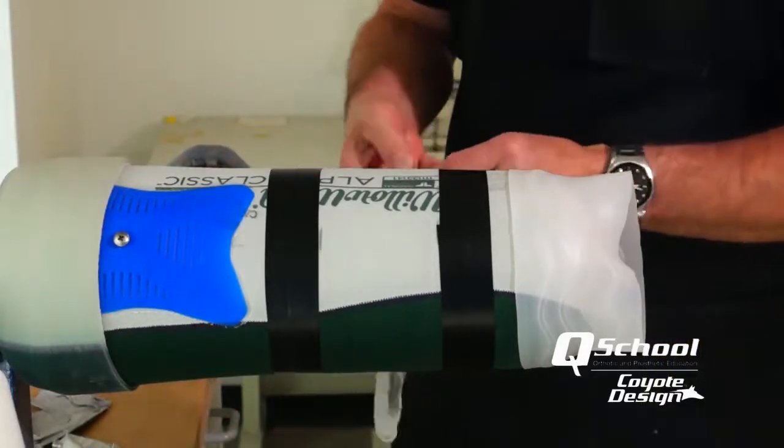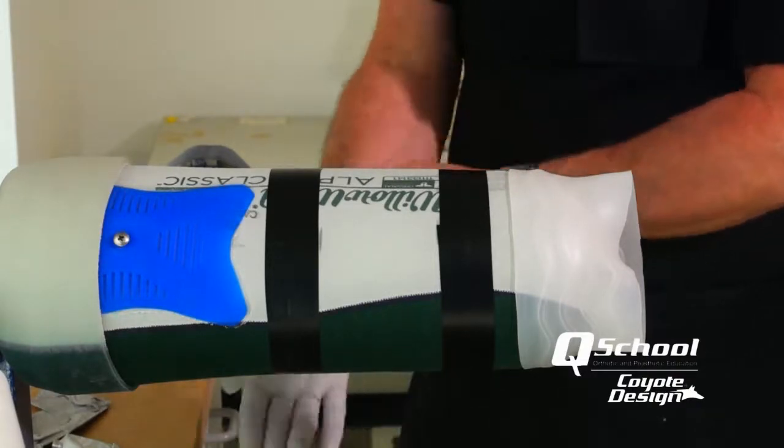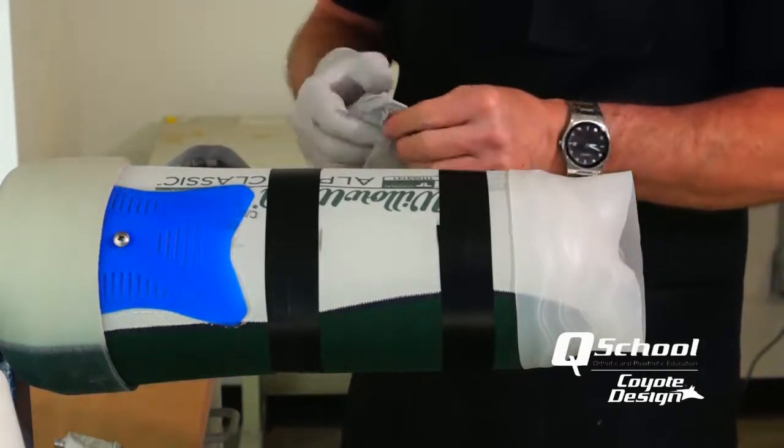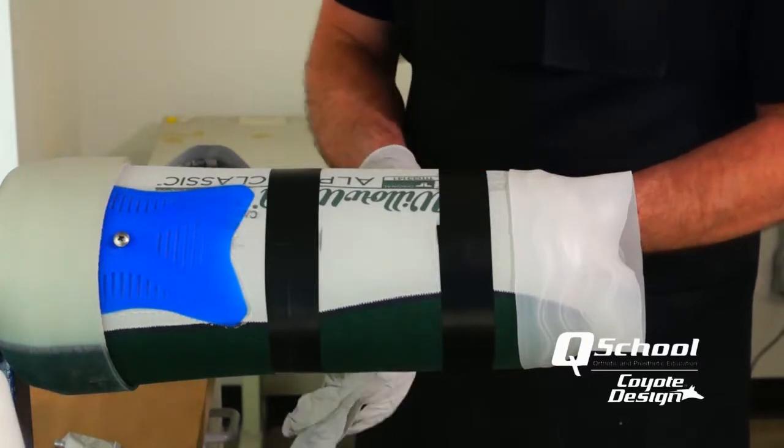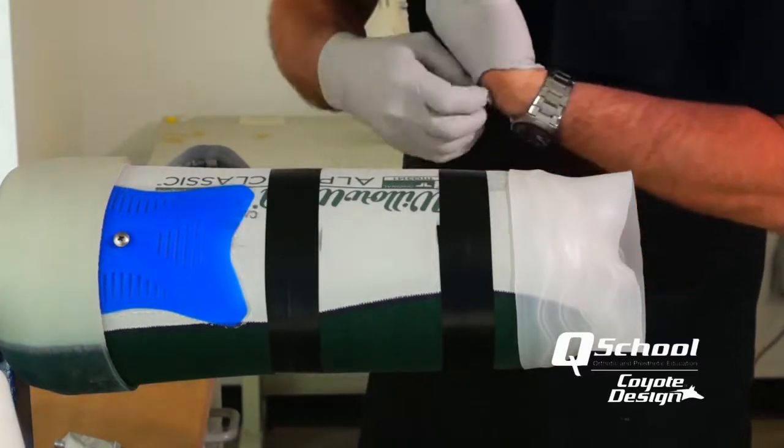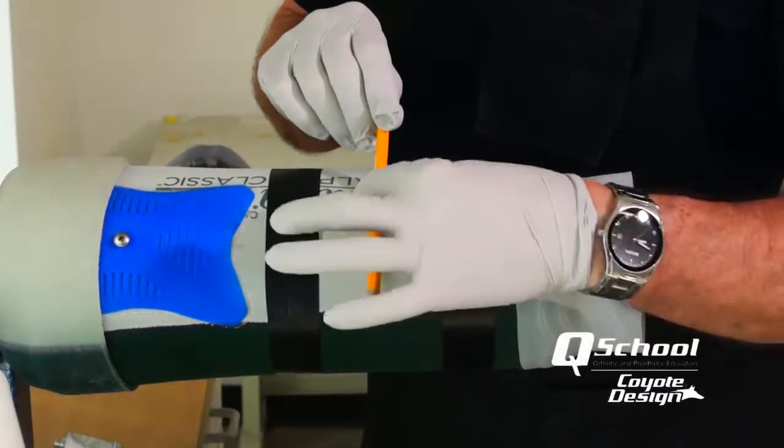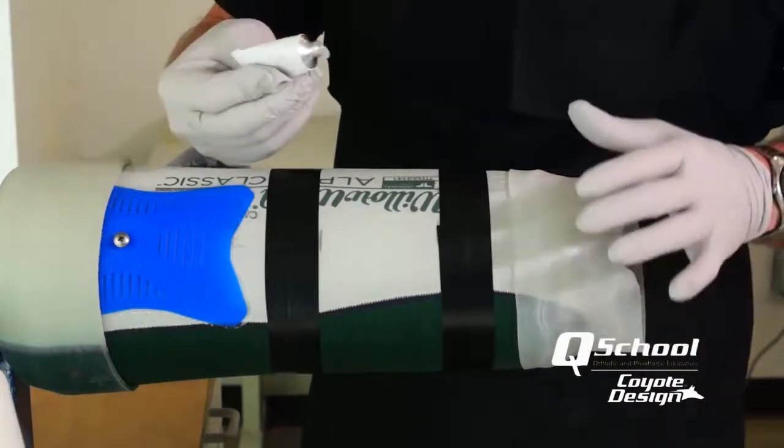Now take our silicone adhesive, and we want to run a bead all the way around the liner, and this is a three to four inch wide band, so you're going to want to run roughly a bead about the thickness of a pencil. So we're going to run a bead about like that pencil, about that much adhesive all the way around this.